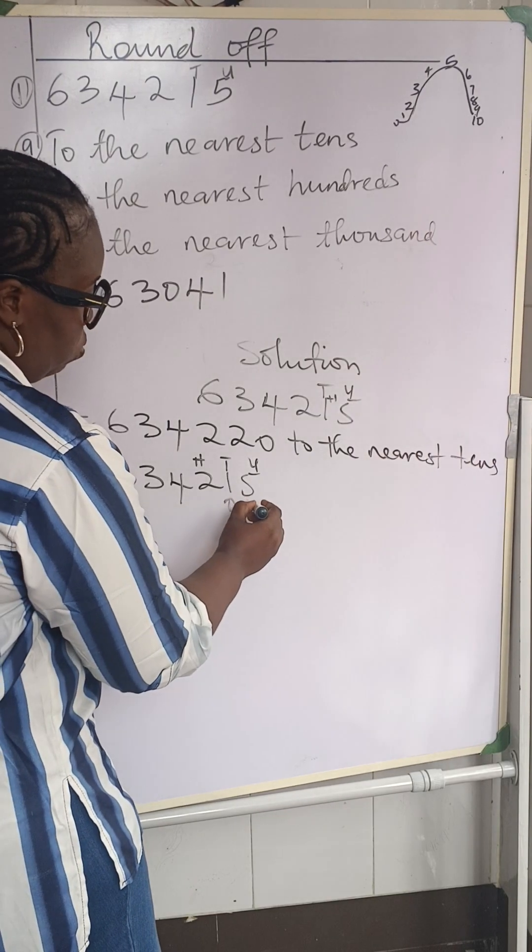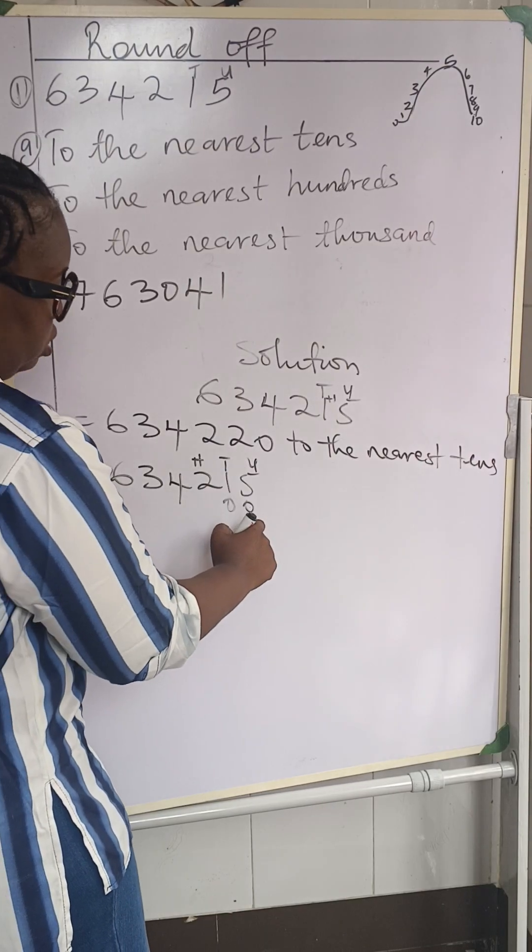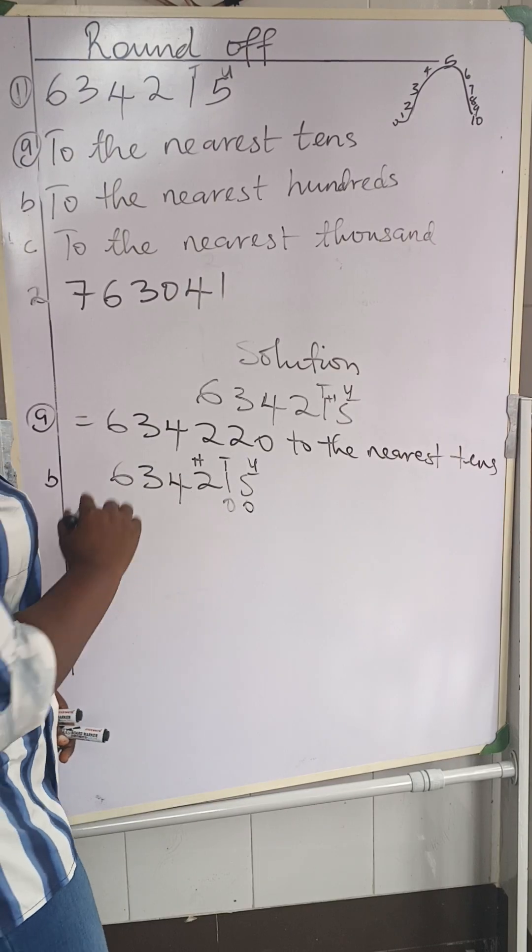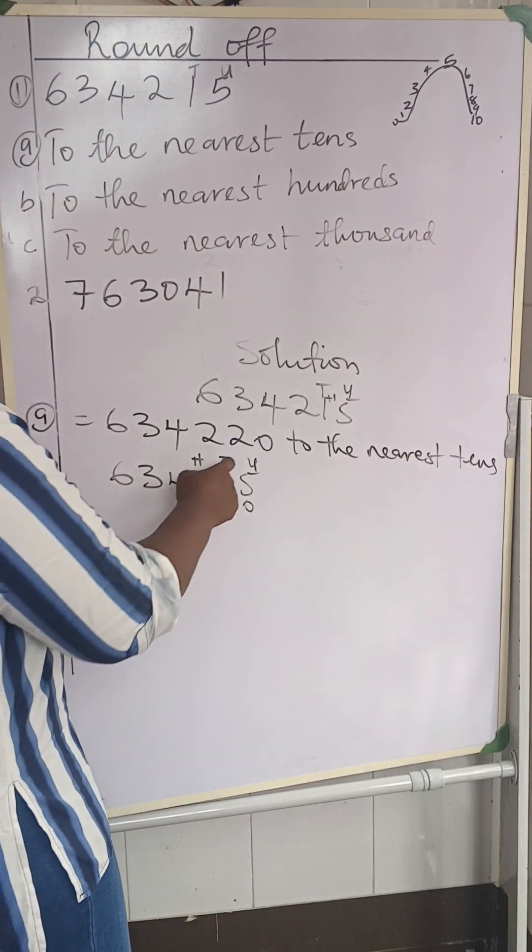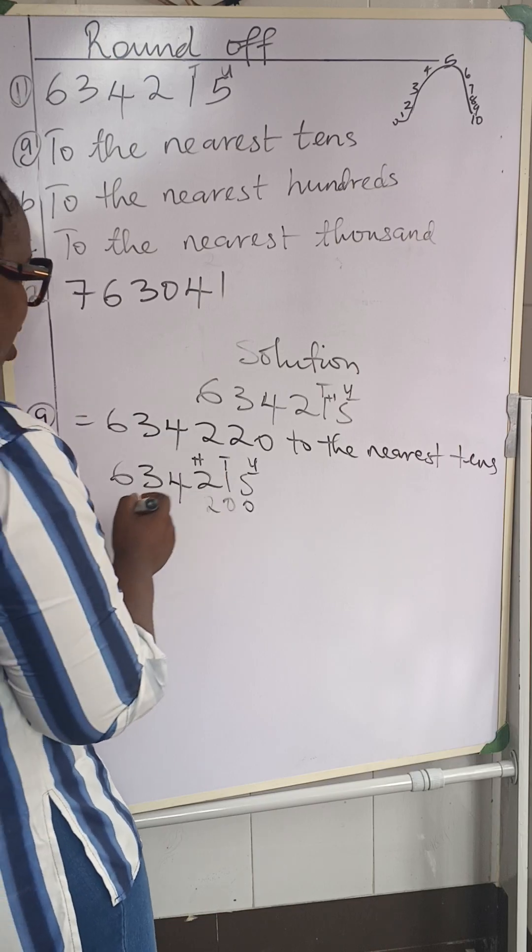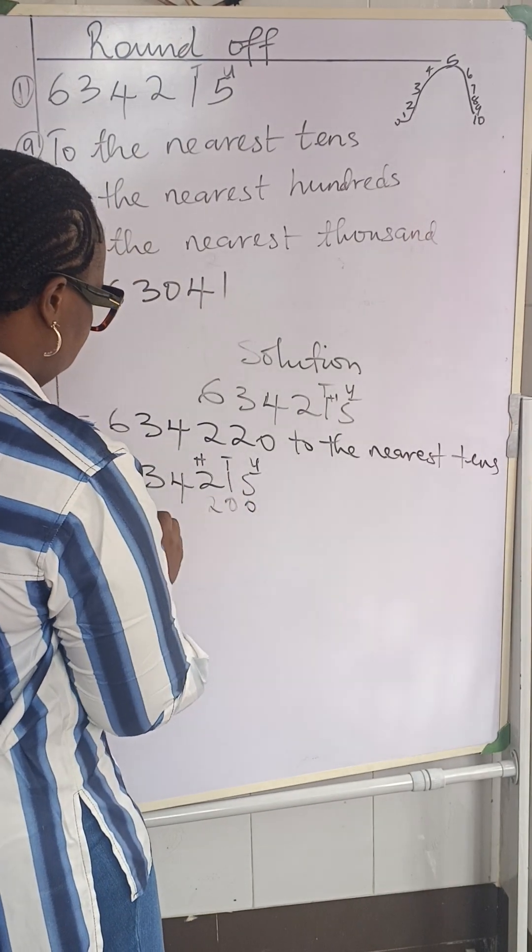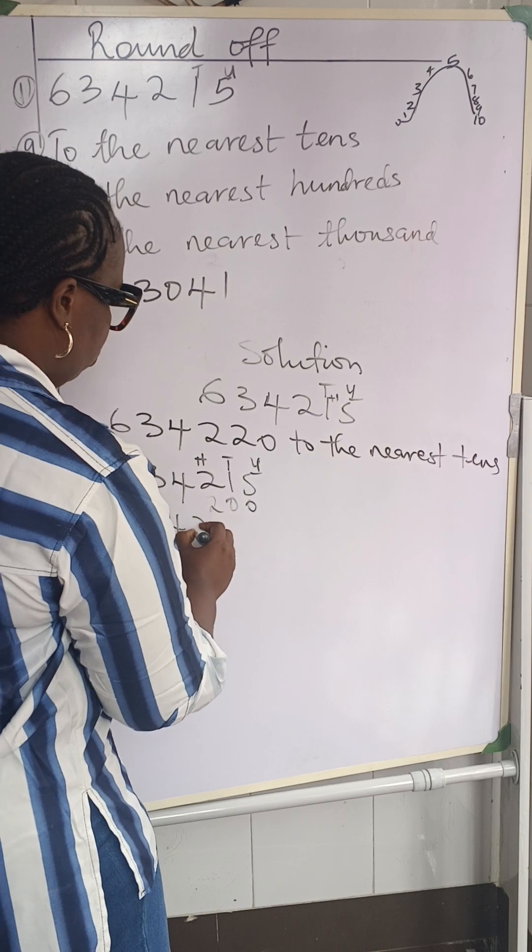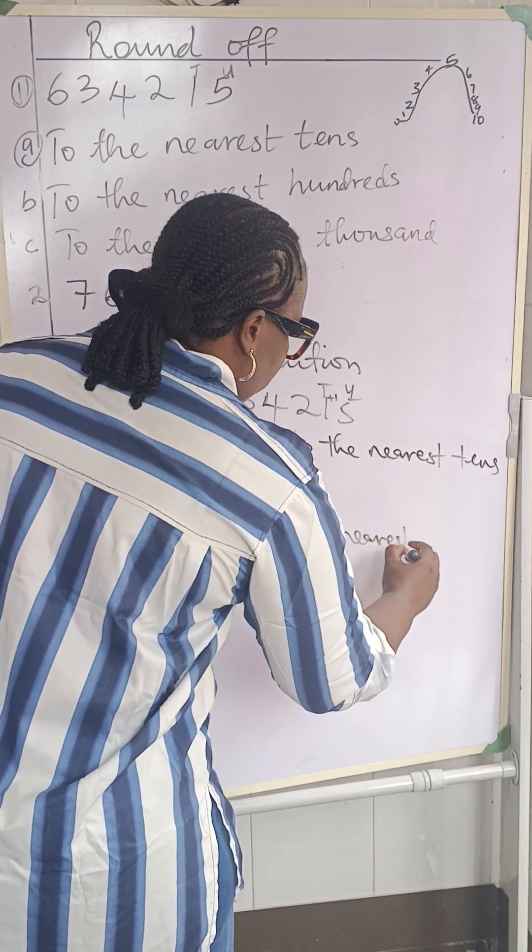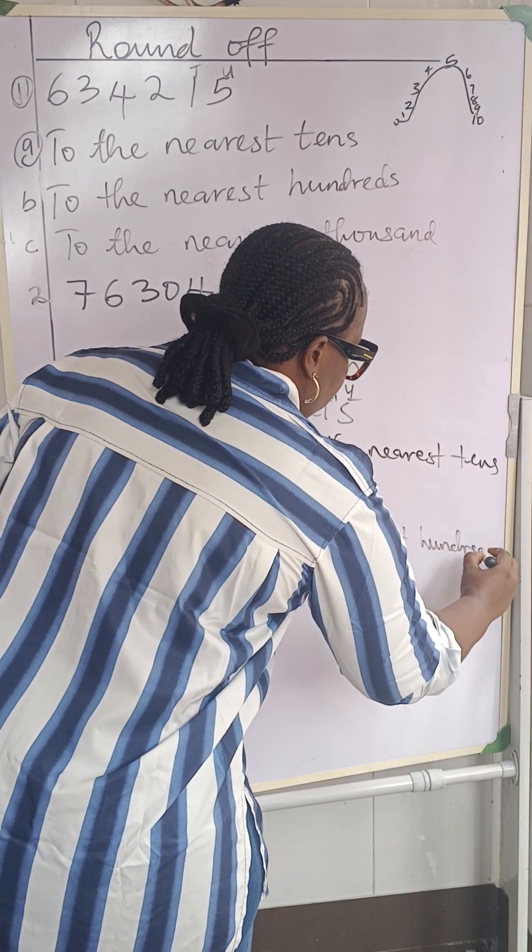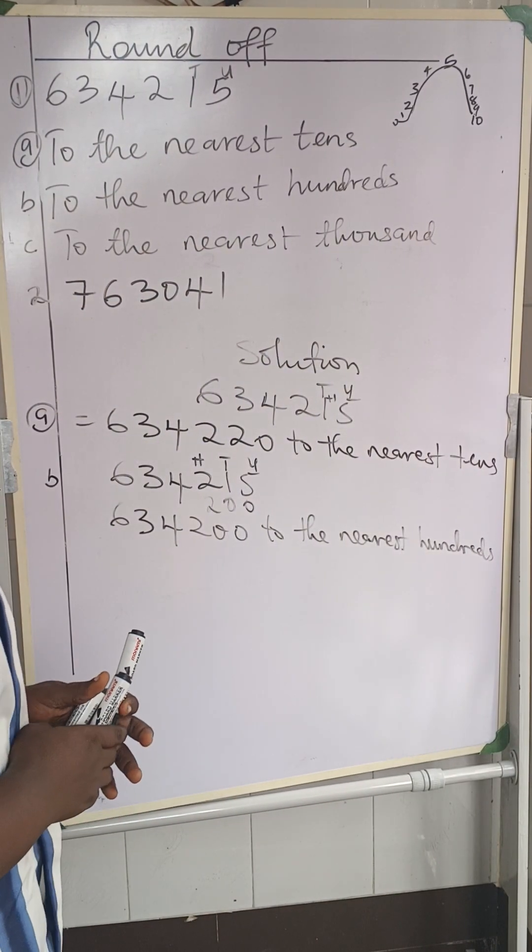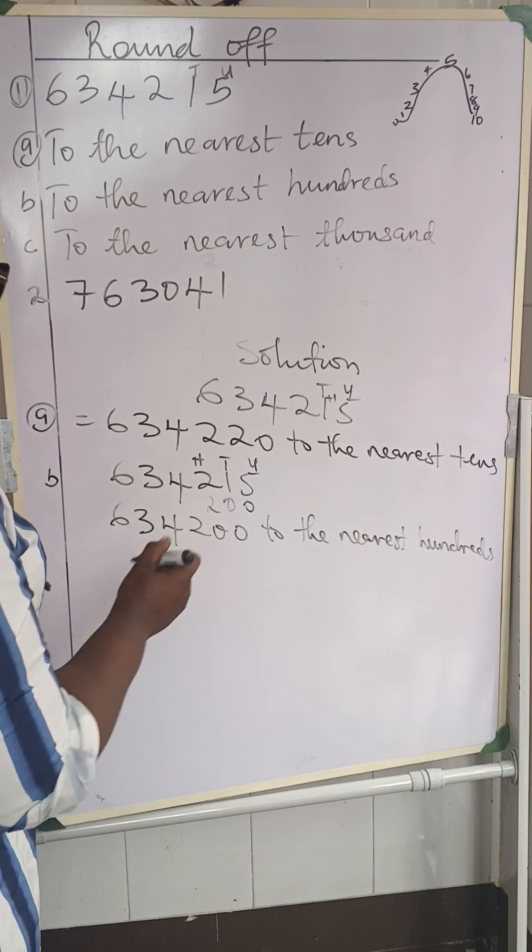It is less than 5. So we are replacing it with a 0 here. We replace it with a 0. This 1 already doesn't have any business with us, but it's still 0. And since this 2, we do not add anything to it, so it will remain as 2. This tens, the neighbor, does not have any effect on it, so it's still going to remain as 2. So our answer is going to be 634,200 to the nearest hundred.